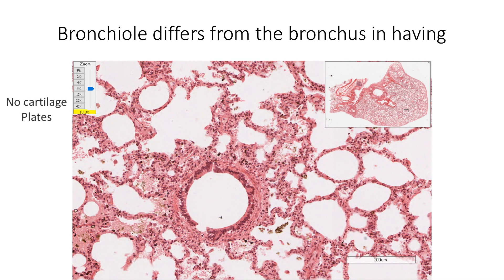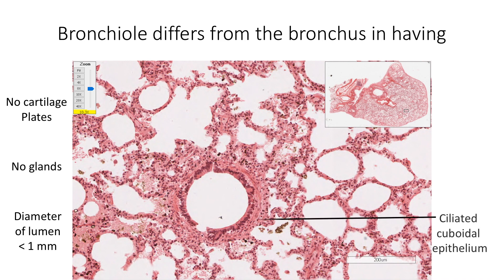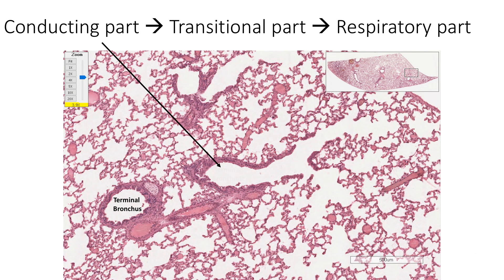Bronchioles differ from the bronchus in having no cartilage plates in their walls, no glands, and a lumen diameter of less than 1 mm. They are lined by ciliated cuboidal epithelium and have circumferential smooth muscle in their wall. Here we see a terminal bronchiole — forming the conducting part of the airway passage — dividing to form the transitional zone, that is, respiratory bronchioles with pockets of alveoli in their wall (shown by the arrow), which in turn branch to form the respiratory part: alveolar duct (marked as AD), atrium (marked as AT), and alveolar sacs (marked as AS) showing alveoli in their walls.